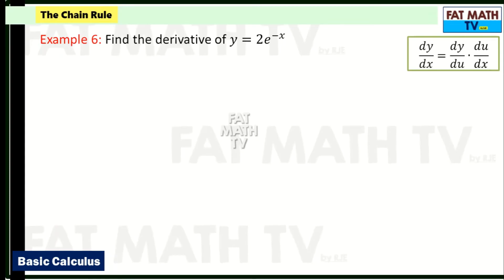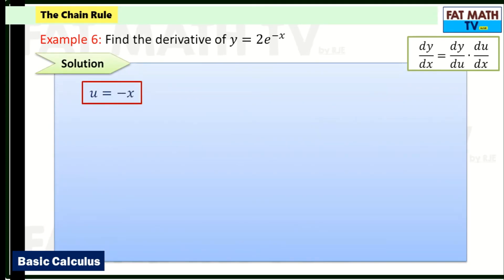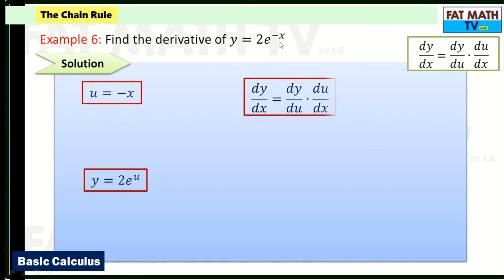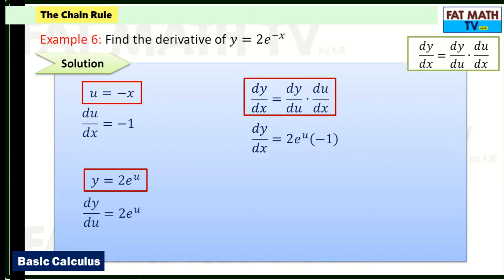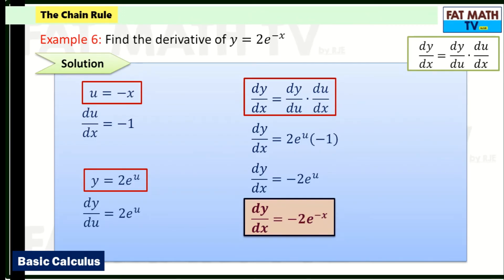Example 6: find the derivative of y = 2e^(−x). Let u = −x, so y = 2e^u. The derivative of −x is −1. The derivative of 2e^u is itself, 2e^u. Multiplying: dy/dx = 2e^u times (−1) = −2e^u. Substituting back: dy/dx = −2e^(−x). As a shortcut, take 2e^(−x) and multiply by the derivative of the exponent, which is −1, giving −2e^(−x).